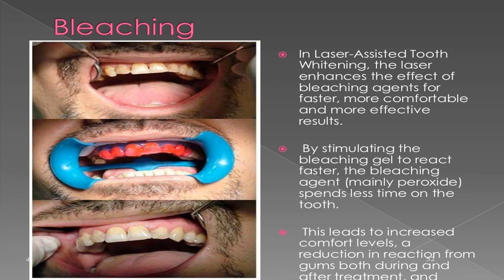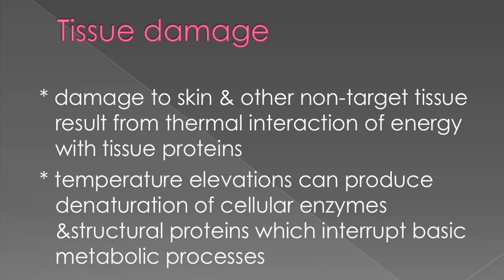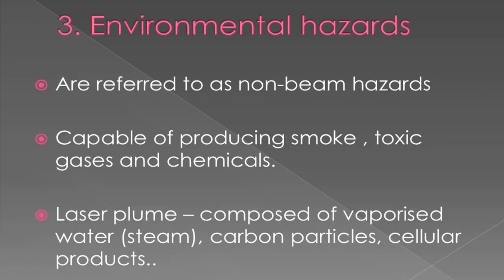Types of hazards: ocular hazards — injury to the eye by direct emission or by reflection from mirror-like surfaces, and irreversible retinal burns by conversion of incident radiation to heat energy. Skin and other non-target tissue damage results from thermal interaction of energy with tissue proteins. Temperature elevations can produce denaturation of cellular enzymes and structural proteins, which interrupt basic metabolic processes.